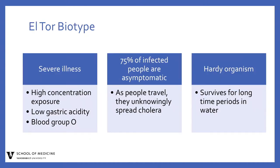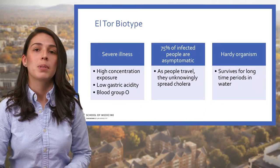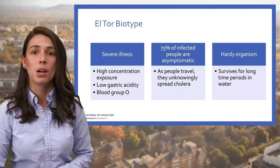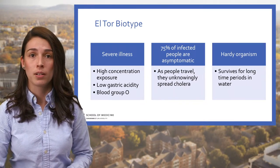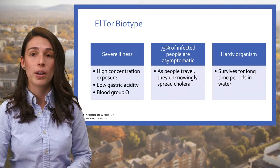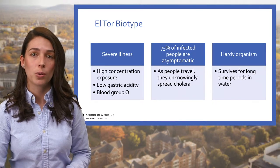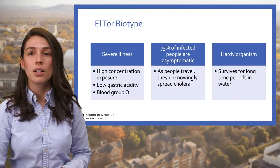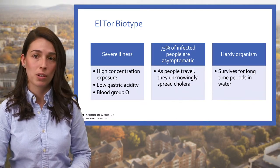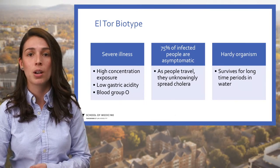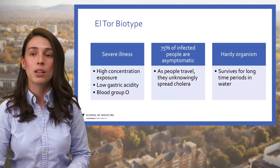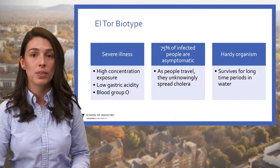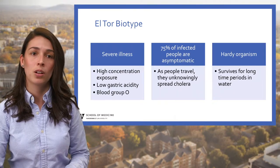The El Tor biotype possesses two characteristics of great epidemiological significance. First, it's a much hardier organism than the classical one, and it can survive for long periods of time in aquatic environments. Second, many people infected with the El Tor biotype experience only mild symptoms or no symptoms at all. Seriously ill patients are highly effective transmitters of cholera, but persons with mild or no symptoms are more likely to travel, thereby playing a crucial role in the spread of the disease. As barriers to commerce and personal travel disappear, the potential for disease to be transmitted rapidly from one continent to another increases.